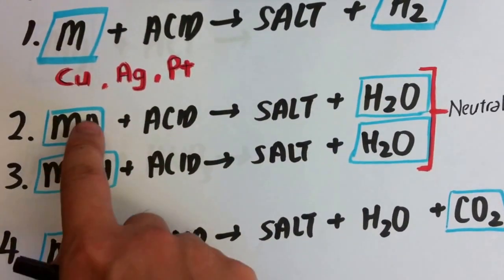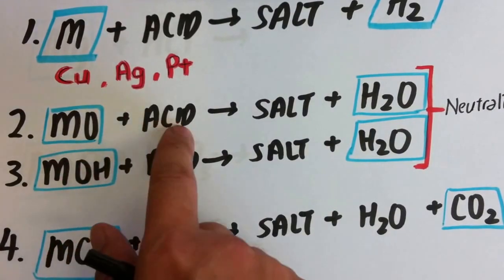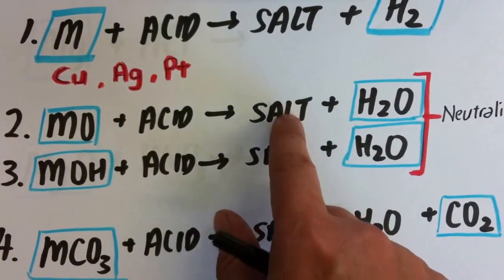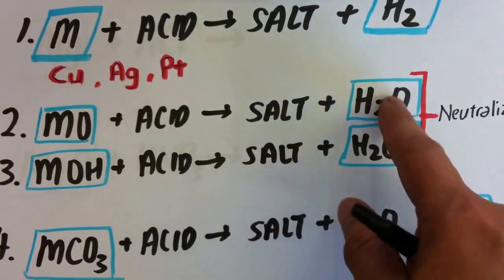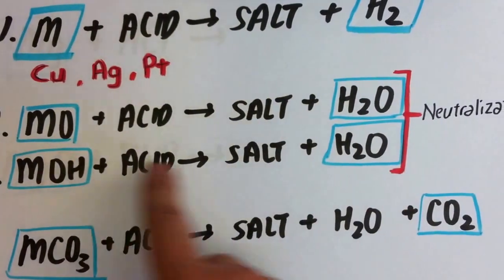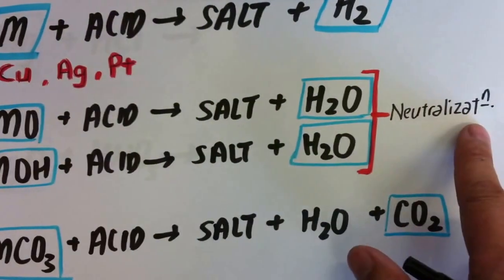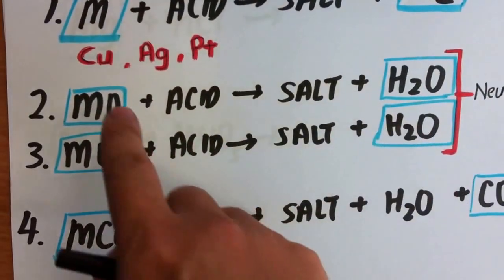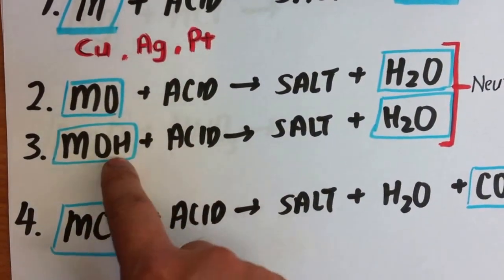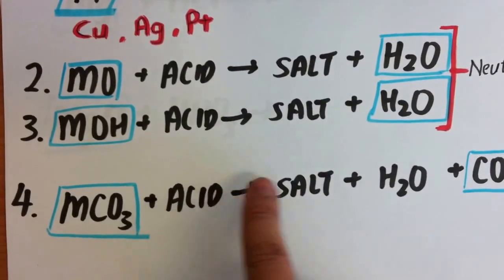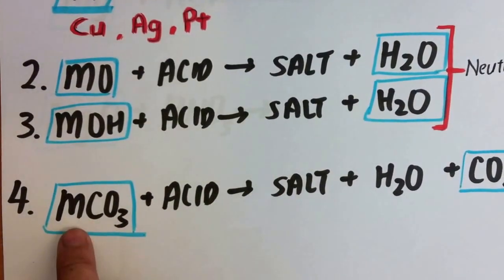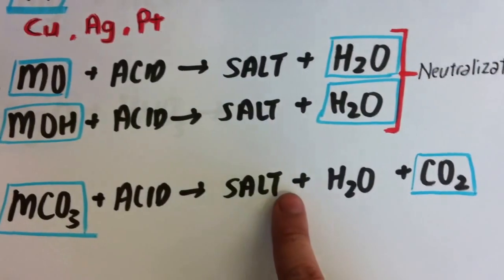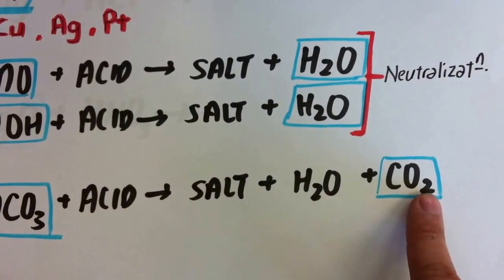Metal oxides plus acid and metal hydroxides plus acid will give you a reaction that forms salt and water. This reaction is known as a neutralization reaction because salt and water is formed. Metal oxides and metal hydroxides are also commonly known as bases. For the last category, metal carbonates plus acid will give you three things: salt, water, and carbon dioxide.